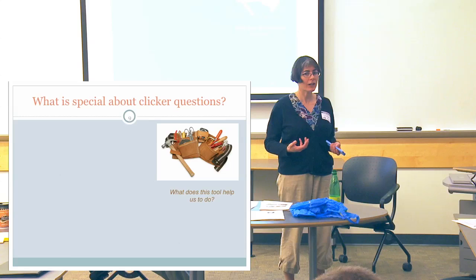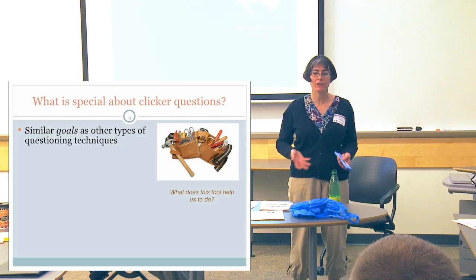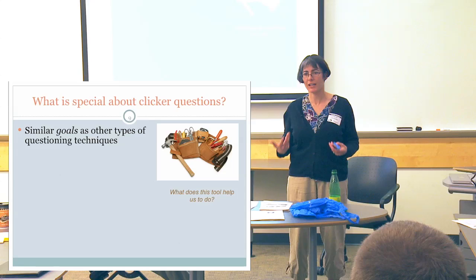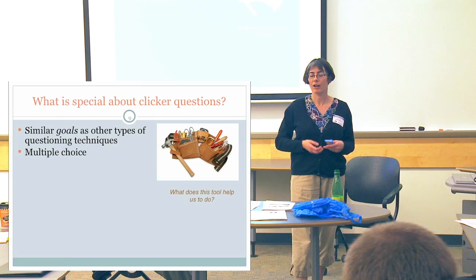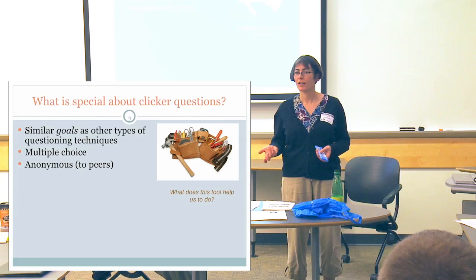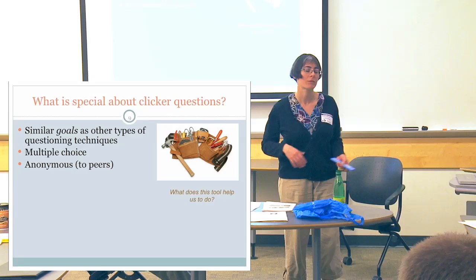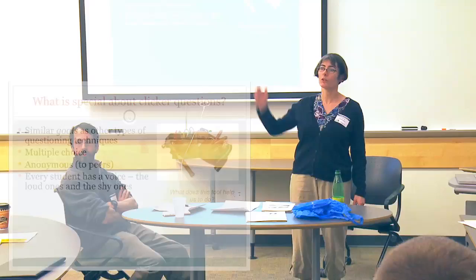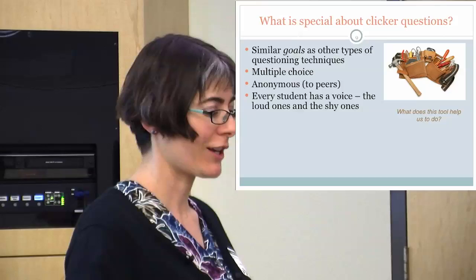What's special about clicker questions? The goals of asking clicker questions are very similar to the goals of asking any sort of question in class — be it a quiz, or a verbal question you're throwing out for the class to consider. It's not a different type of questioning; it's a different type of questioning tool. They tend to be multiple choice, which requires some strategic question design. It's really helpful that they're anonymous, at least to students' peers — they don't worry about what other people will judge them for if they raise their hand for the wrong answer. And if you throw out a verbal question, you're going to hear from the students in the front who are raising their hand every time. This is a way to get a more accurate picture of how the whole class is viewing something — you're hearing from every student.